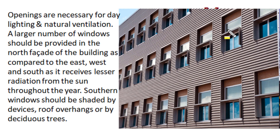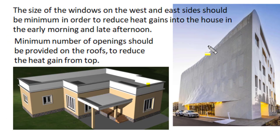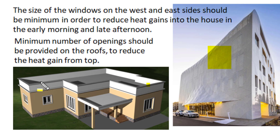Such north-facing openings receive good daylighting and enhance natural ventilation. Windows on the southern façade receive direct sunlight, which is desirable in winter, and appropriate shading restricts summer sun radiation. On the southern window, shading devices, roof overhangs, or deciduous trees — which are dense and active in summer but less restrictive in winter — should be provided. On the west and east sides, the number and size of windows should be minimum to reduce heat gains from the east in the morning and from the west in the late afternoon. Minimum openings on the roof also reduce heat gain from the top.